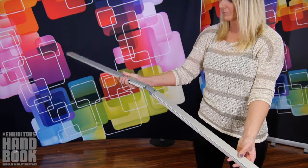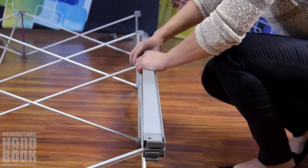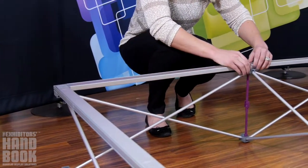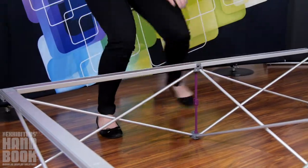Assemble the bungee channel bars and slide them into the front face of the frame, starting with the left and right sides and moving to the top and bottom. Ensure the channel for the SEG graphics is facing out.